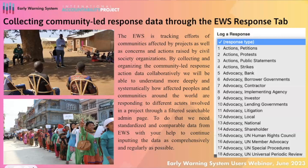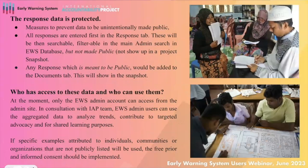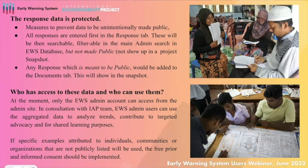From the public side, you won't see it yet. These response data can be quite sensitive — we are working in a shrunk civic space and defenders face a lot of threats and security risks, so we are mindful of that. We have measures to protect the data being input in the early warning system. One of those is to first identify whether this information is meant to be public or not. All information can go to the respond tab because it's not going to show up in any project information that is publicly published — it's not in the snapshot. You have to log in as admin to be able to see it.